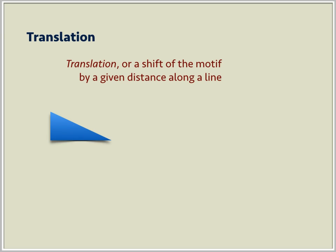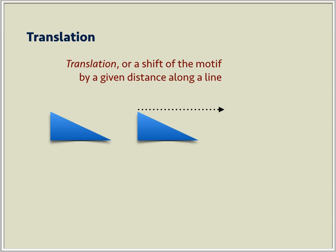It can be proven mathematically that there are four symmetries in the plane. One symmetry is the translation. A translation shifts the motif — in this case a triangle — by a given distance along a line.